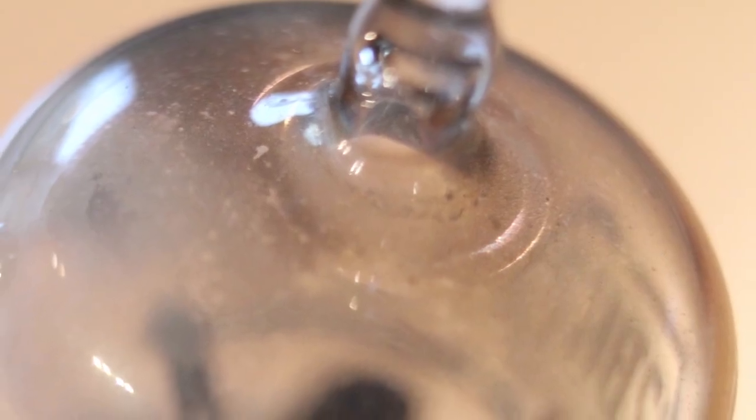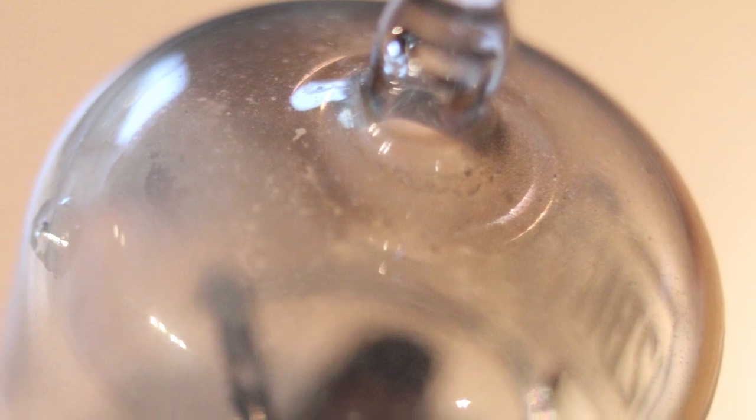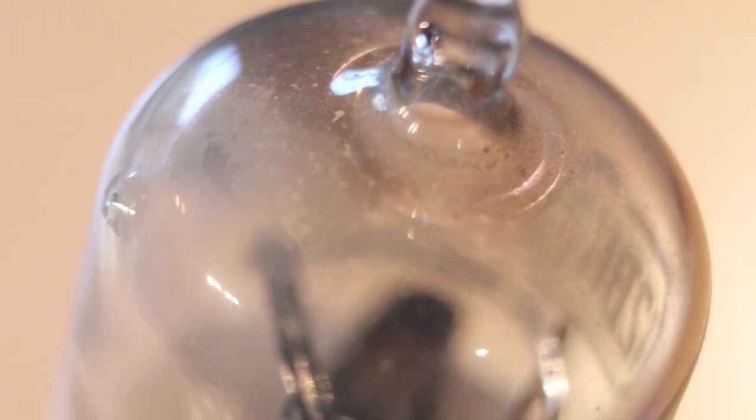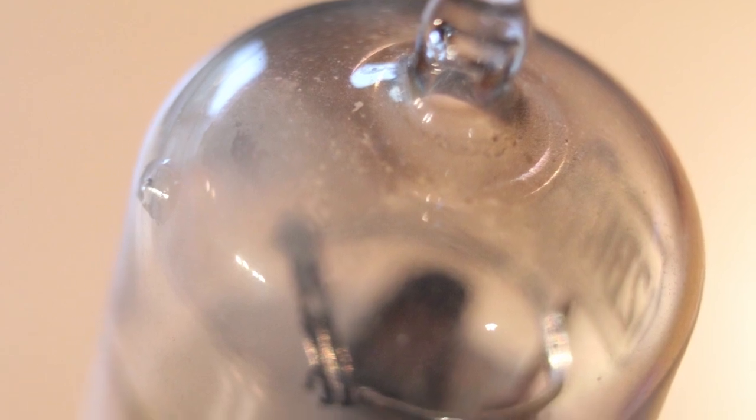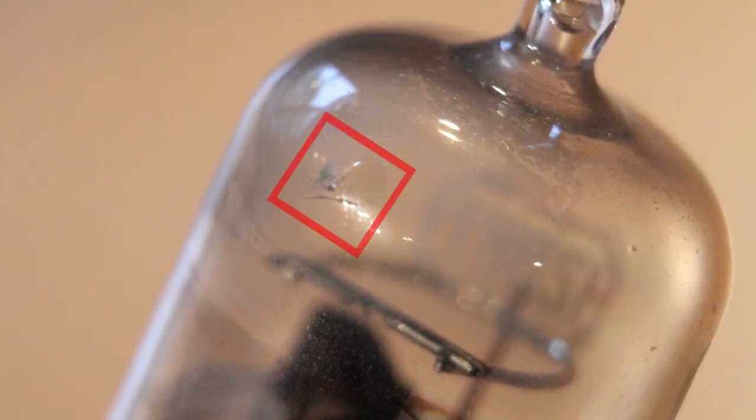And finally the 12BH7, we can tell it's bad pretty much just by looking at the getter up on the top. We can see that it's pretty much disappeared and it's turned a really light brown color. And if you look closely enough you'll see why that happened. There's a small little crack in the glass right here and that allowed oxygen to get inside and contaminate the inside which the getter tried to absorb.